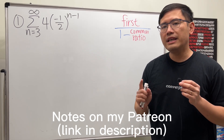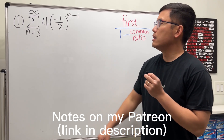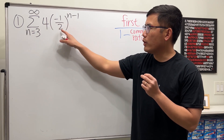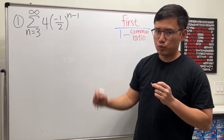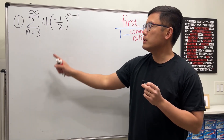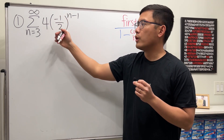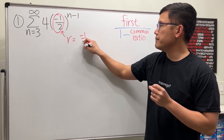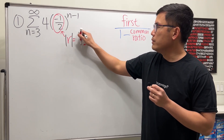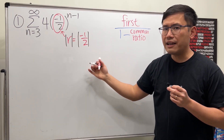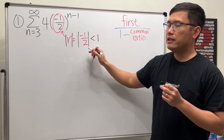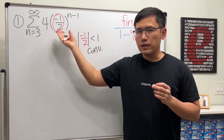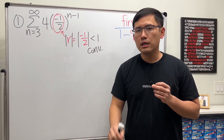Let's see how to evaluate infinite geometric series. The first one is the series as n goes from three to infinity of four times negative one over two raised to the n minus one power. The key here is to first notice the common ratio — in this case we have negative one over two, so that's the r. The absolute value of r is one half, which is indeed less than one, therefore this series converges.